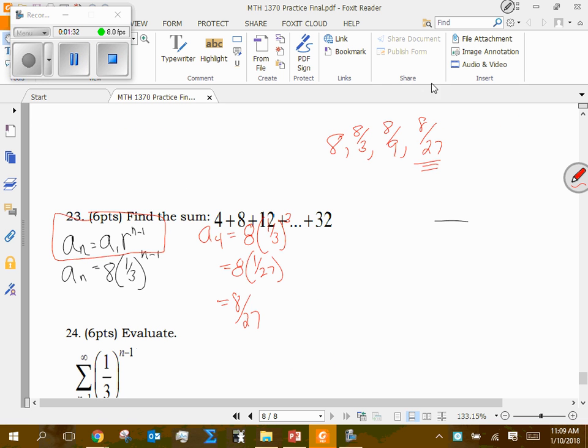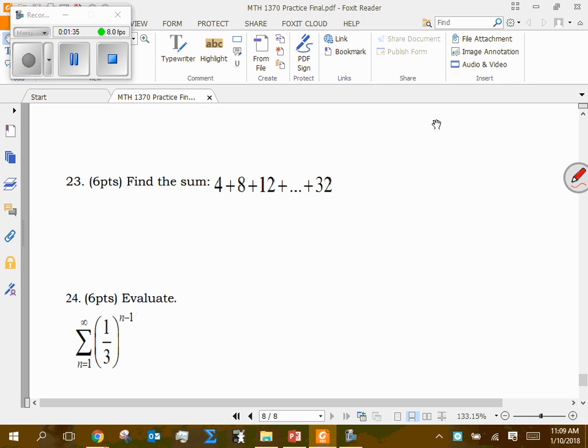Looking at the second one here, or I guess question 23, this is an arithmetic sequence, and it says find the sum. You could do this by going, I think we talked about in class, you could go 4, 8, 12, the next one is 16, the next one is 20, 24, 28, and then 32. And if you want the sum, just add those up. That's fine. I don't have a problem with that, but there are better ways of doing it, more efficient ways, especially if that number gets really big.